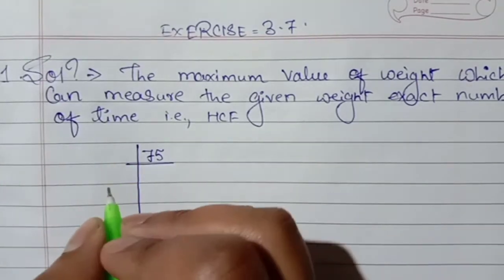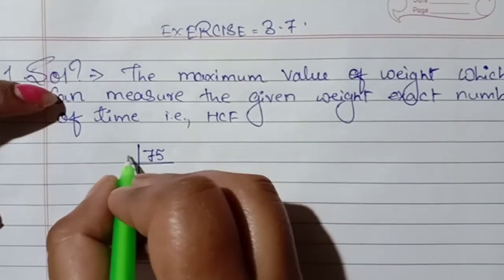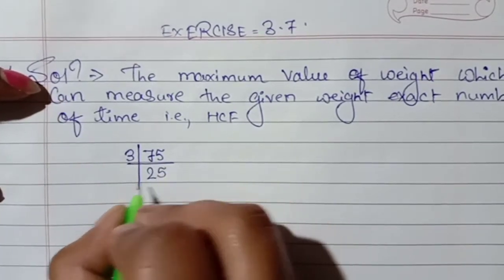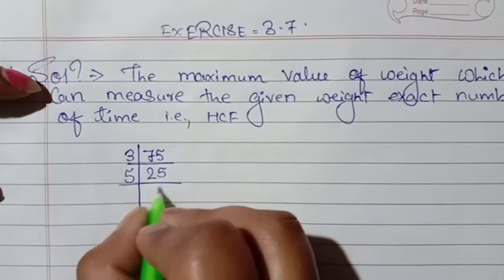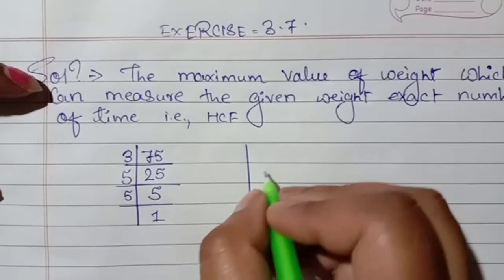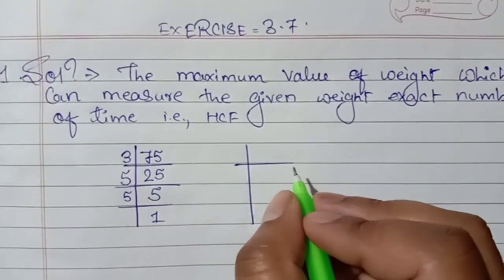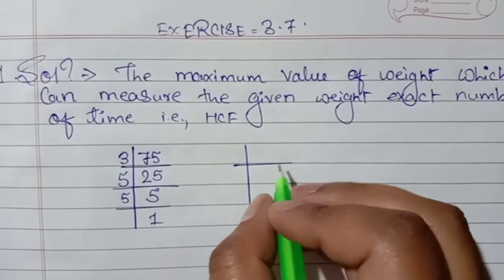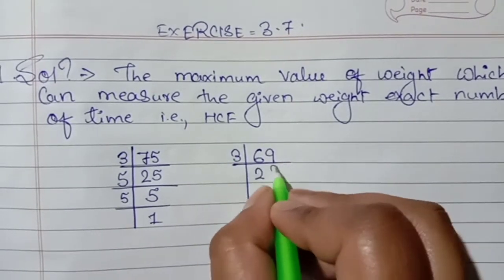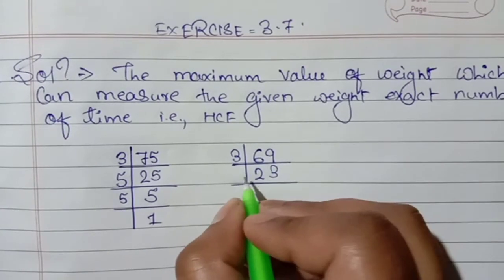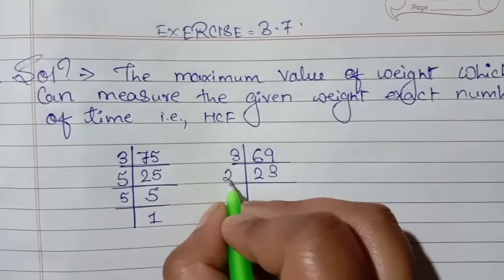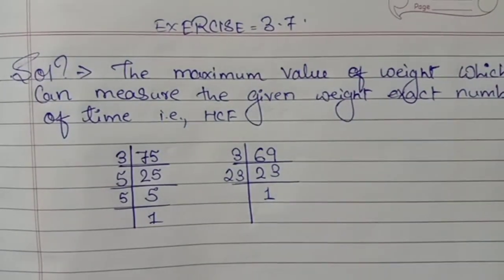We will find 75 with 2, it will not go. It will go from 3. So 3 times 6 is 18, 3 times 25 is 75. Now it will go with 5: 5 times 5 is 25, 5 and 5. Same way, we have to do the next one: 69, which will also go from 3. 3 times 6 is 18, 3 times 3 is 9. Now 23 will not go from any other number except 23, so 23 once is 23.